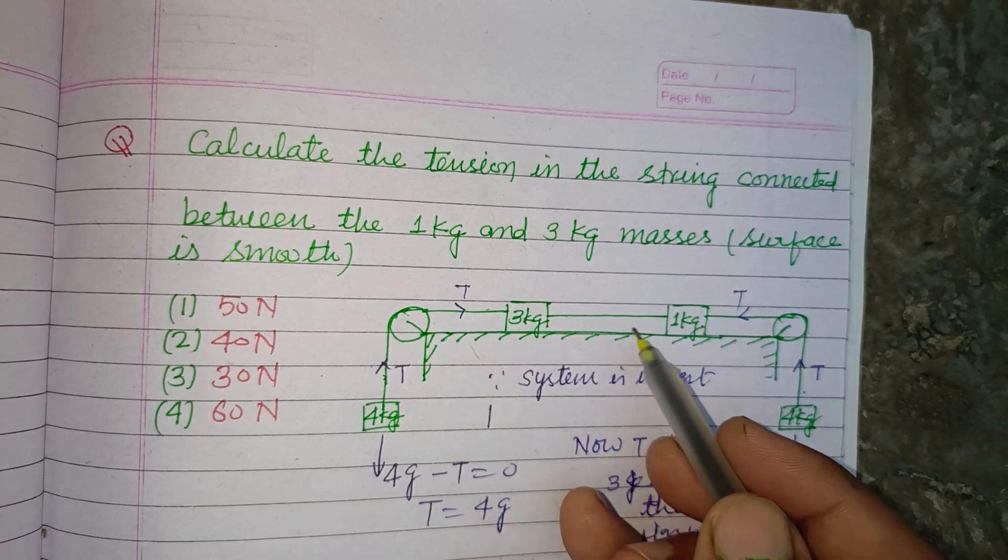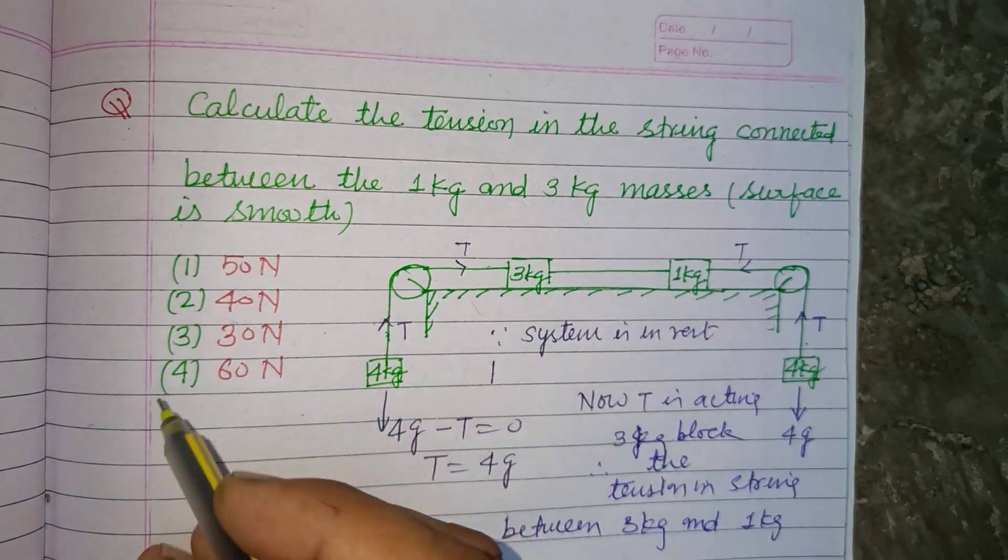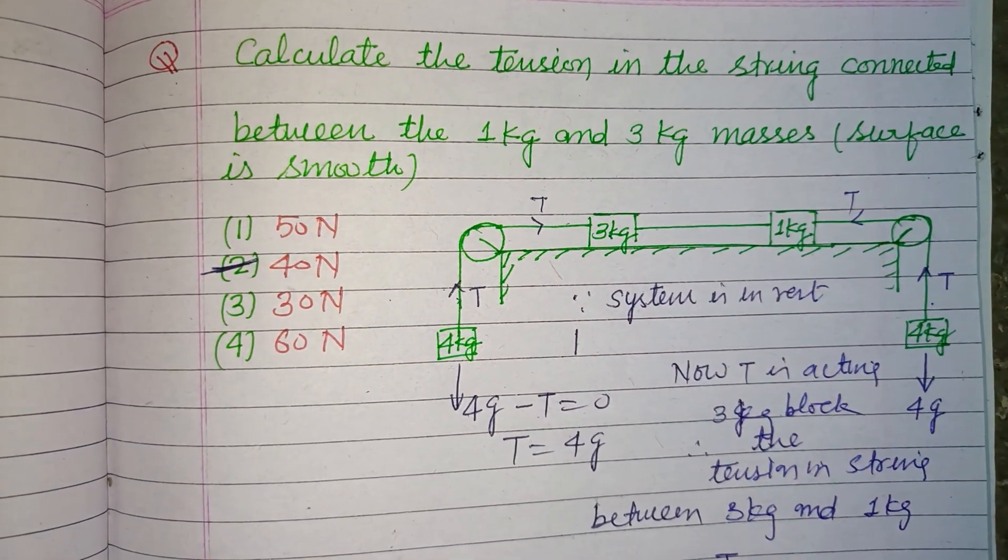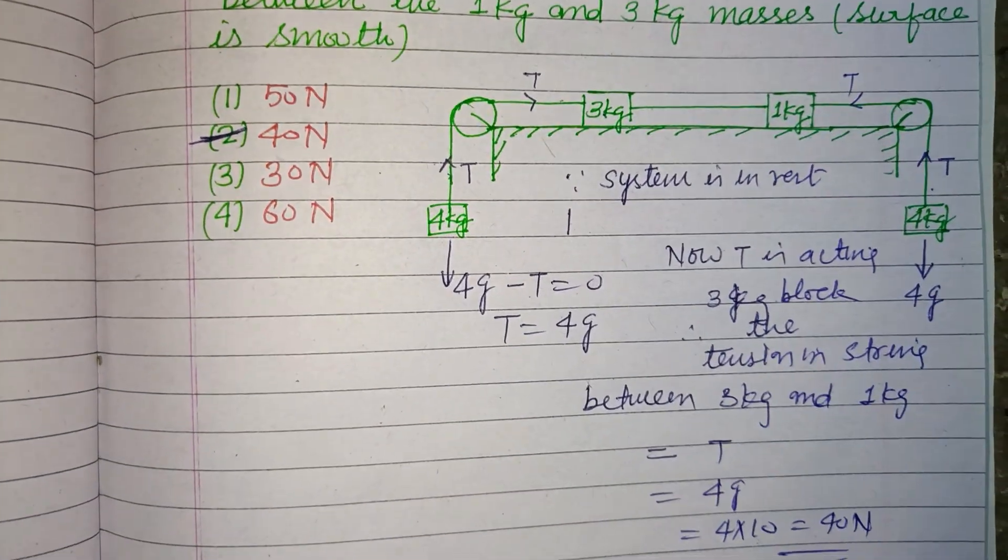40 newton is the tension between 3 kg and 1 kg blocks, so second is the correct answer. I hope you got it. Please like the video, subscribe to the channel, thanks for watching.